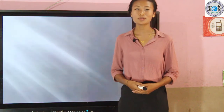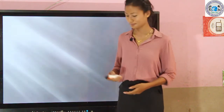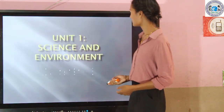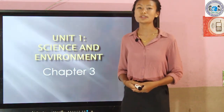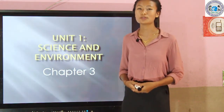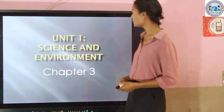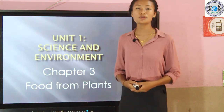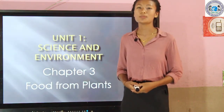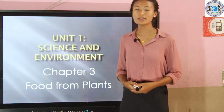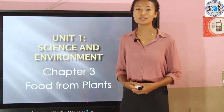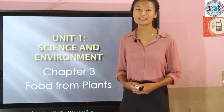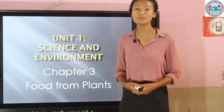In science, we are in Unit 1 — Science and Environment. In Unit 1, we are going to study Chapter 3, which is Food from Plants. Before we study about food from plants, I'm going to revise a chapter which we have studied already in our previous class.